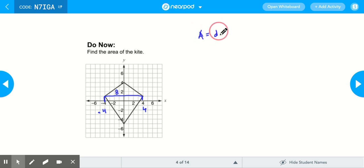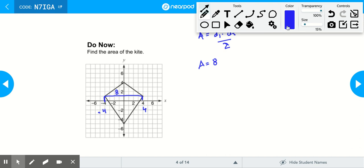So diagonal 1 times diagonal 2 divided by 2. My first diagonal is 8. Let's find out how much is the second diagonal. I'll change the color for the second diagonal to red.